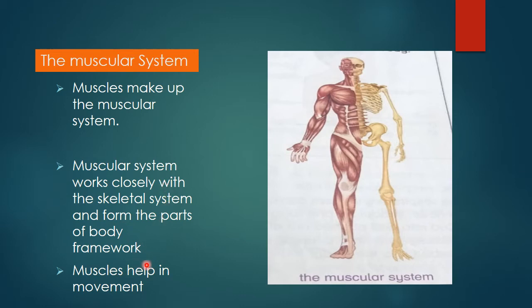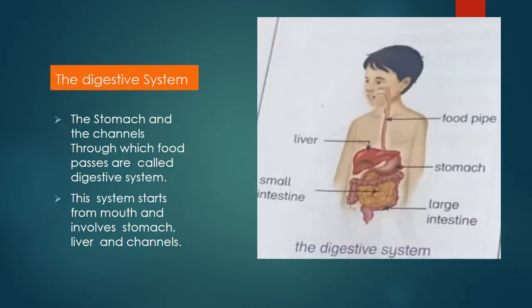The function of the muscles and the bones together is movement. Now we will discuss the next system: the digestive system. You know that there is a process called digestion, which is the breakdown of food. Digestion means the breakdown of food into small pieces. The system which is involved in the process of breakdown of food is called the digestive system.